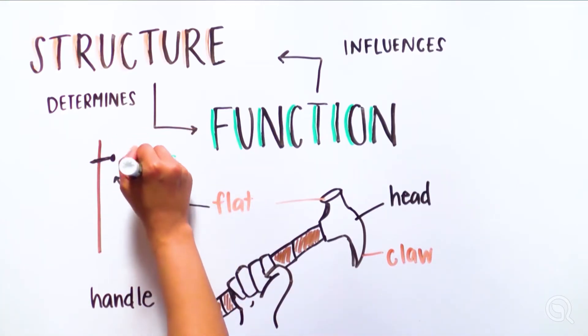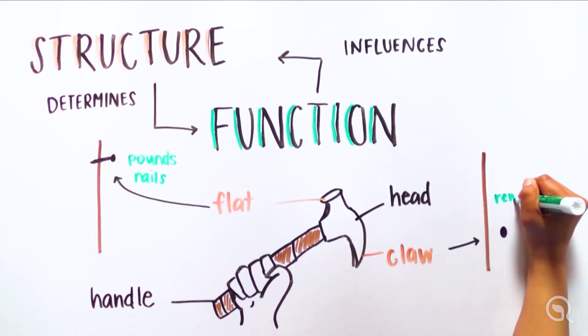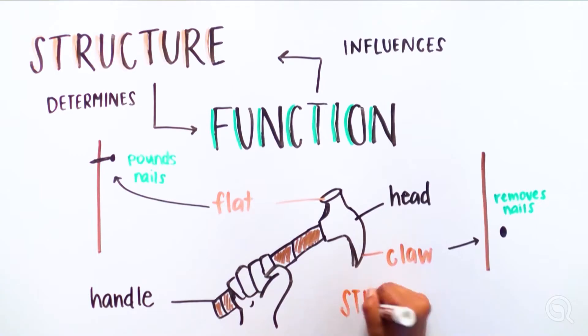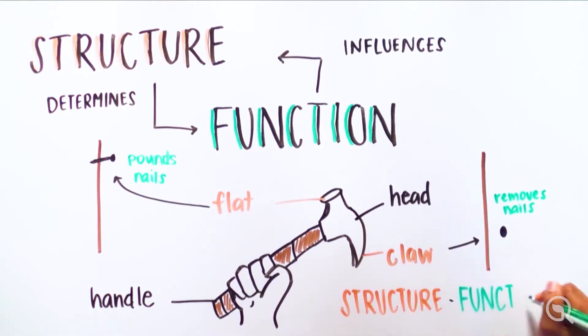But what is their function? The flat face pounds nails, while the claw removes nails. The hammer's structure is built with a specific purpose in mind, and this determines its function. In this case, two functions.